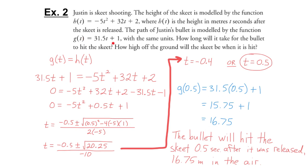To solve this linear quadratic system, I combined the equations, set it equal to 0, simplified it, then solved. In example 1 we solved by factoring; in this example we used the quadratic formula — but you follow the same method. Combine the equations, solve, then substitute your answer back into one of the original equations to find the other variable.